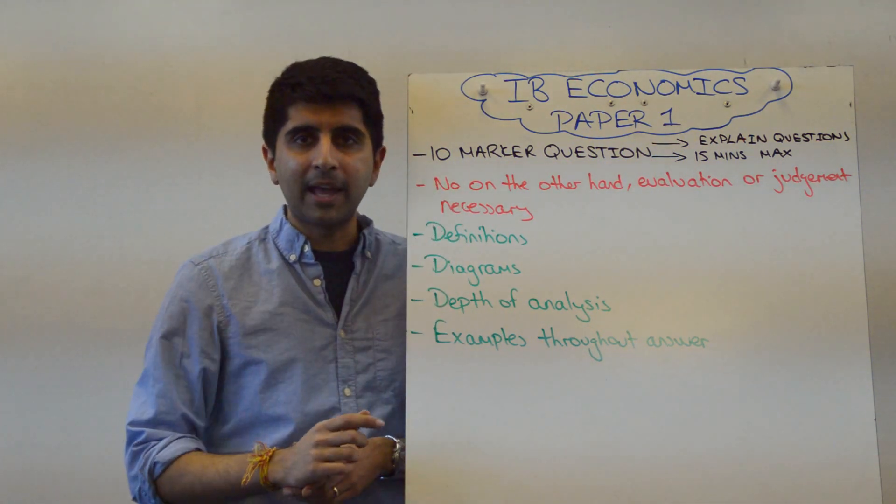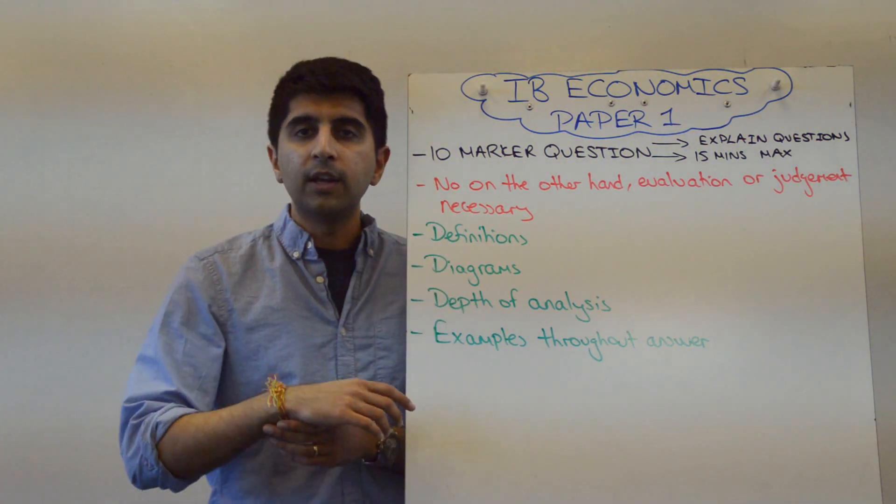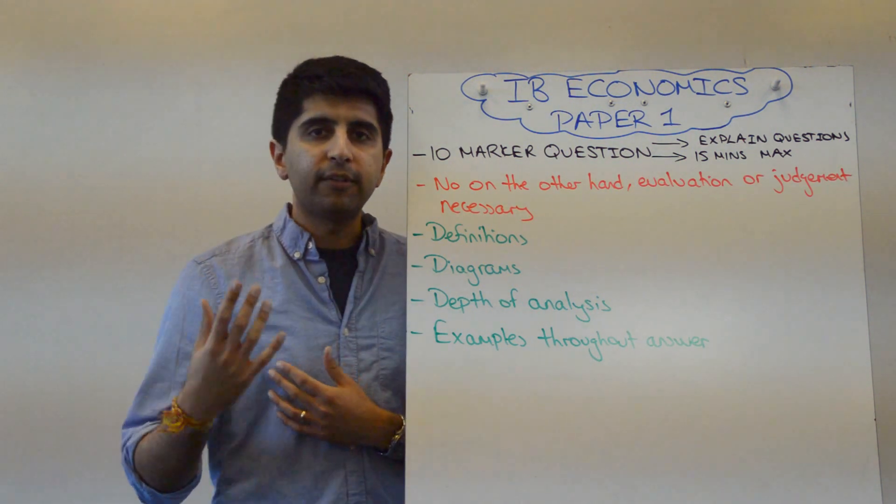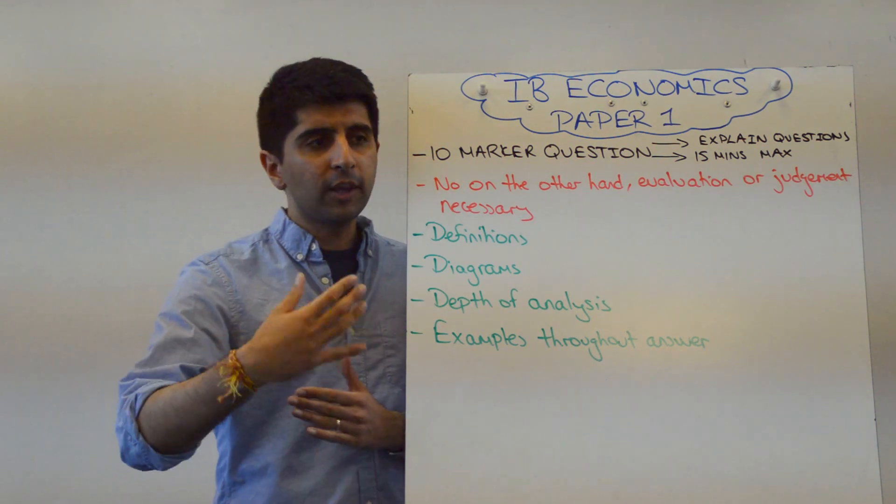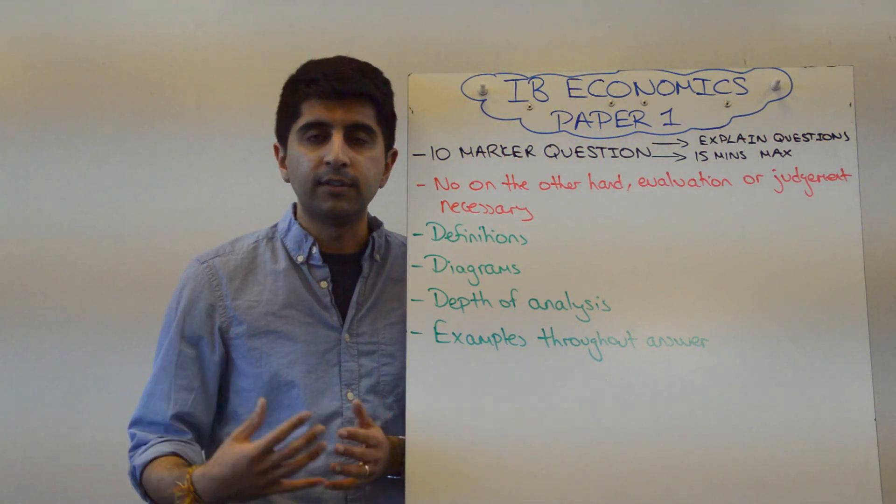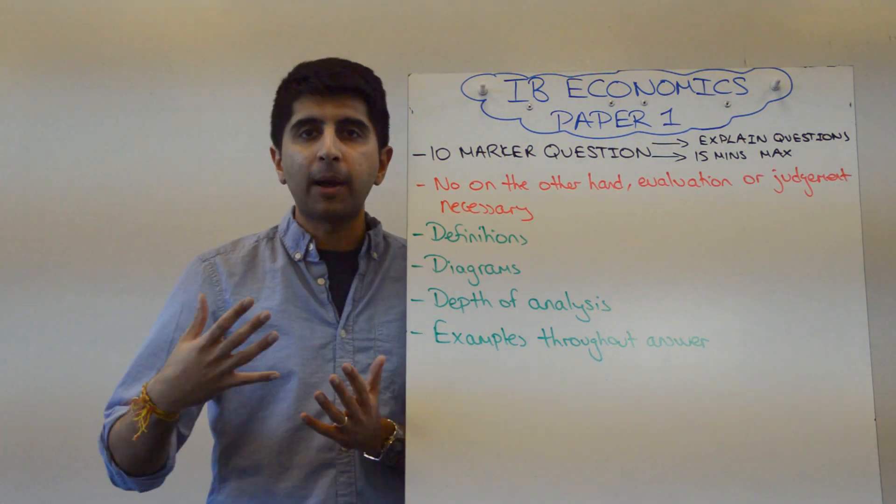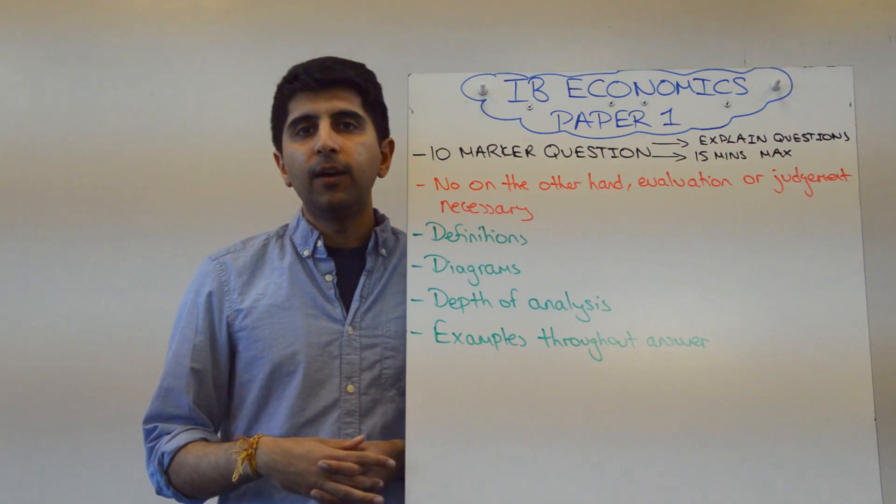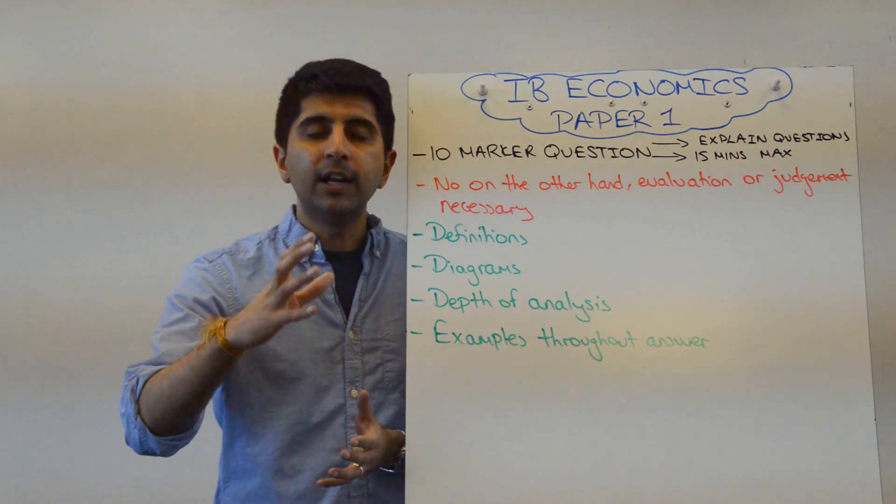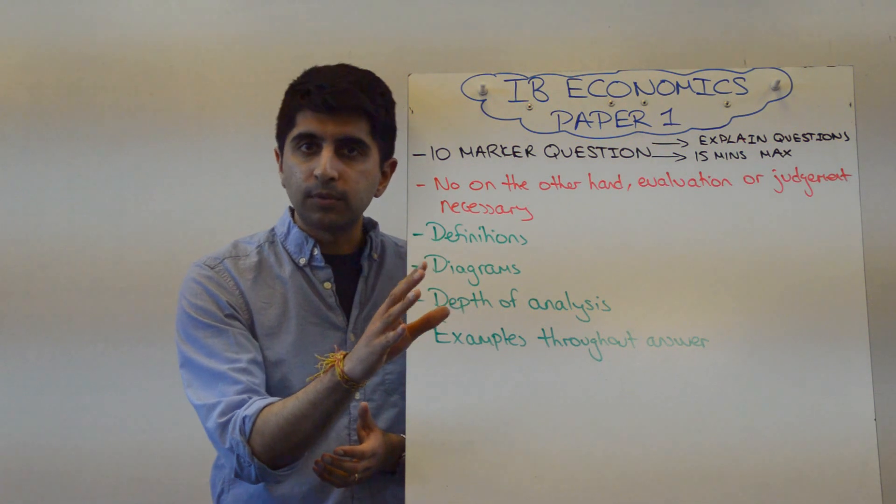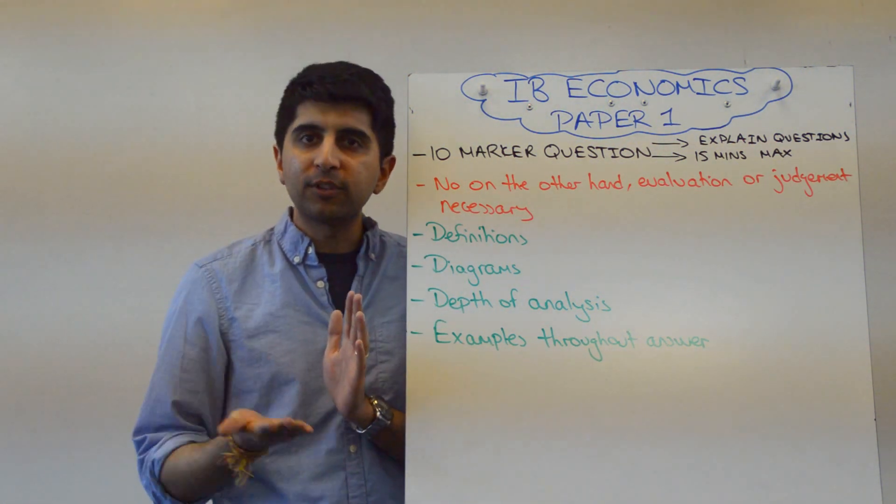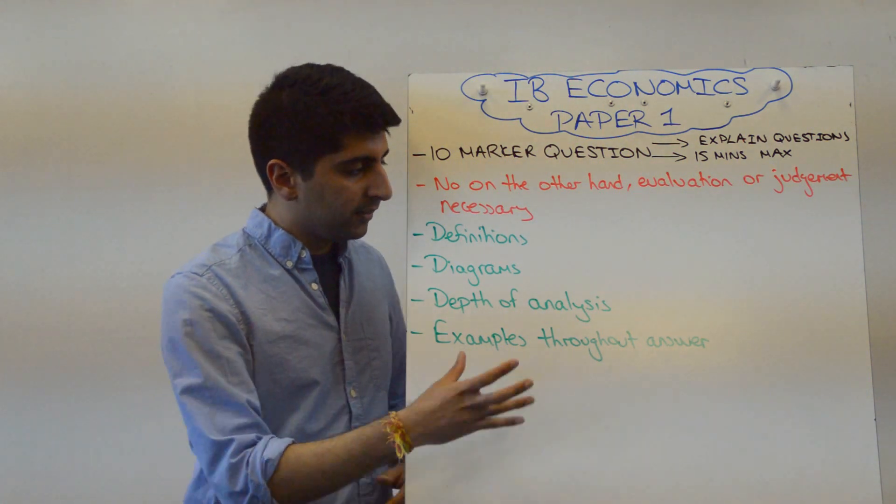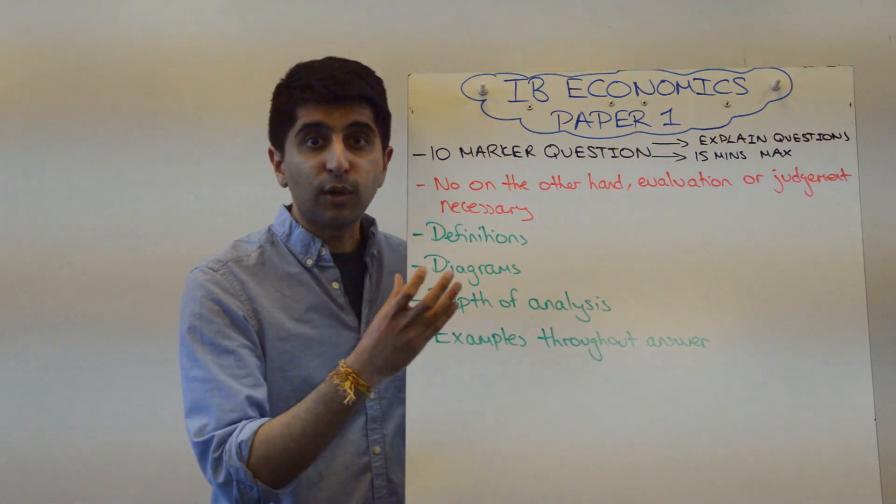A lot of students plonk them right at the end of the ten mark. They do all these three things. And then right at the end, last few lines. Oh, an example of this is this. That's not effective use of examples. Effective use of examples is that when you do everything in your essay, you explain your theory with examples. All the time. So if you're talking about elastic demand, that's when to use your examples. When you're talking about market failures and positive or negative externalities, that's when to use your examples. When you're talking about AD shifting to the right for certain reasons, use examples. Use them throughout your essay.